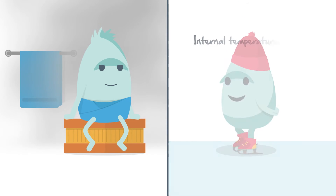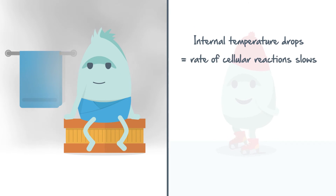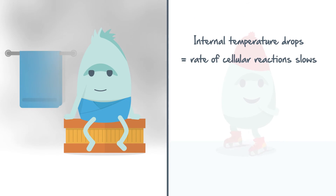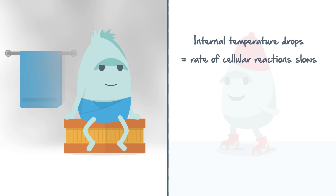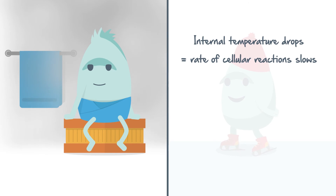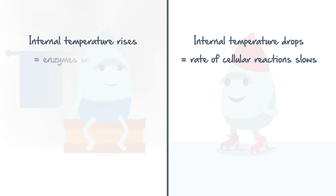If the internal temperature drops, the rate of cellular reactions slows down, so toxins can build up in cells, and important substances required by cells will not be transported fast enough. If the temperature is too high, the enzymes will denature and stop functioning.